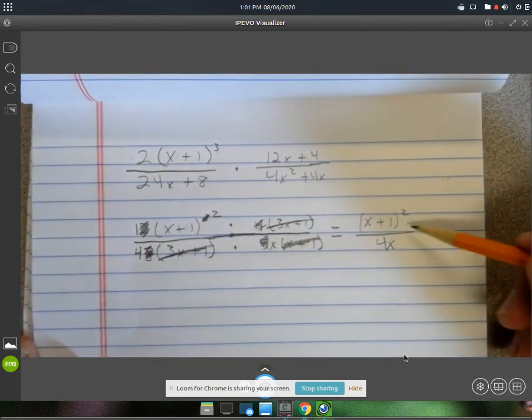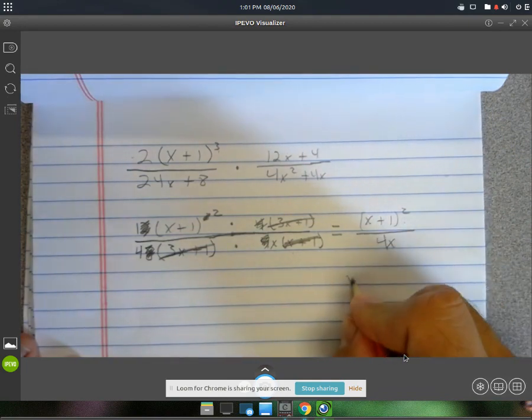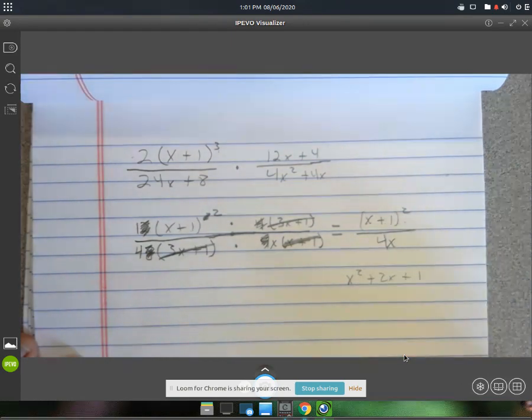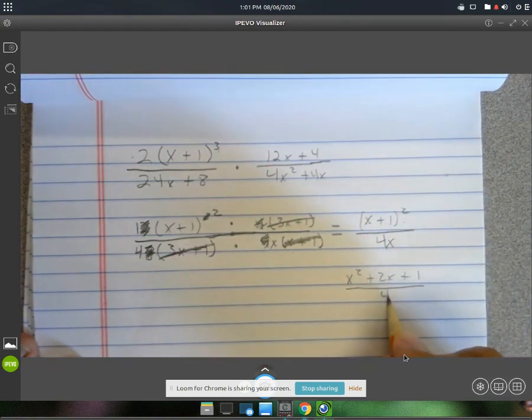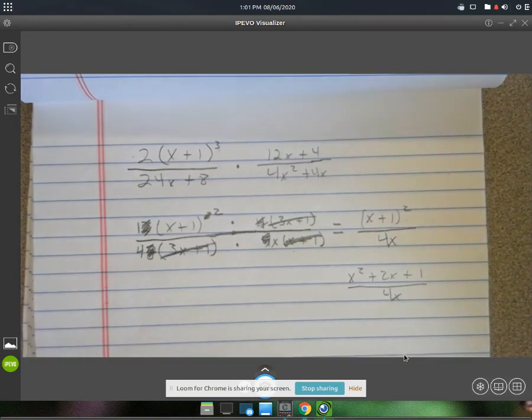But I think on your homework assignment, I think I'm having you guys multiply that kind of stuff out. So your other type of answer would just be x squared plus 2x plus 1, if you multiplied that out, over 4x. But either answer is technically correct. It just depends on what the instructions ask you to do.